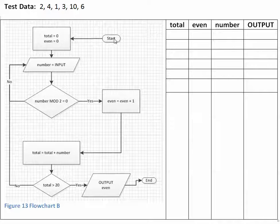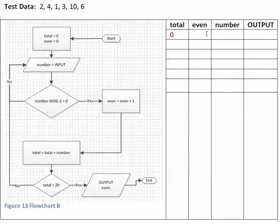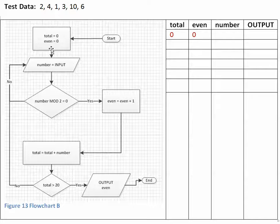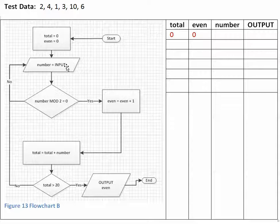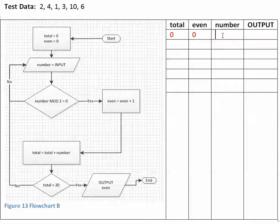So let's start here. We start and we assign the value 0 to total. We assign the value 0 to even. We follow the arrow down, and number is assigned the value of the user input. The user input comes from the test data, so we assign the value 2 to number.